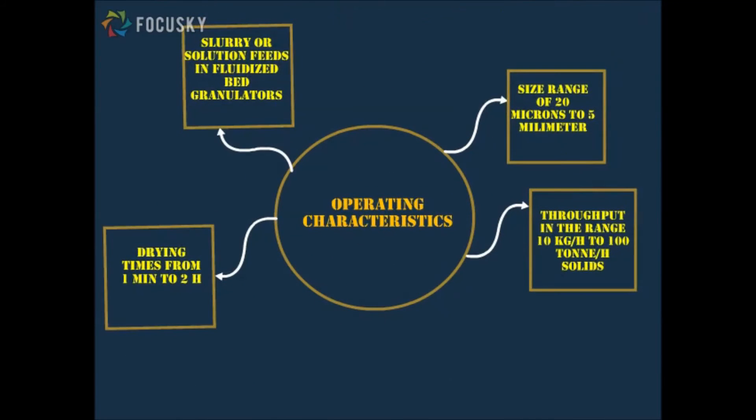Operating characteristics of fluidized bed dryers have their own ability to handle first, particulate feed and product in the size range of 20 microns to 5 mm; second, slurry or solution feeds in fluidized bed granulators; third, throughput in the range 10 kg per hour to 100 ton per hour solids; and the last one, drying times from 1 minute to 2 hours.